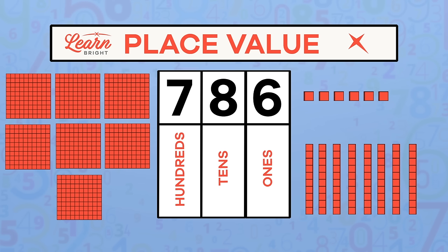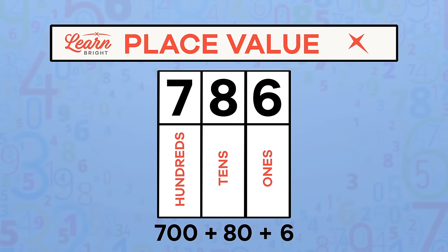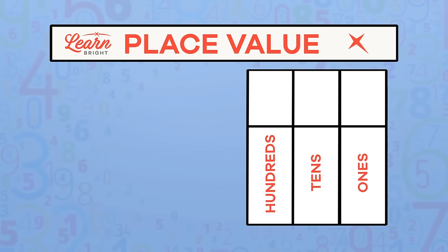786 is the same as 700 plus 80 plus 6. So far, we've only looked at numbers with three digits. Let's talk about the place values after hundreds.